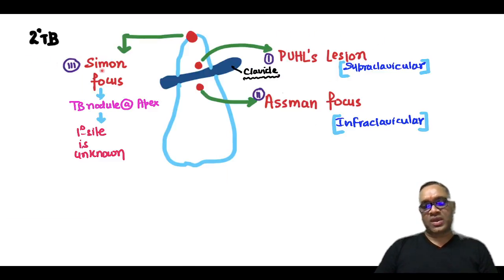Now in secondary tuberculosis, we are having two things. Simon focus, which is TB nodule at the apex, whose primary is unknown. Second is the two lesions which are around the clavicle. Above the clavicle is Puhl's lesion, supraclavicular. Below the clavicle is Assmann focus, infraclavicular.